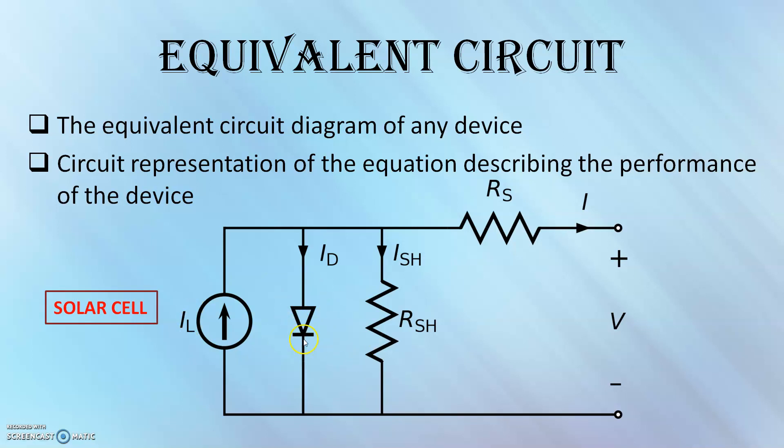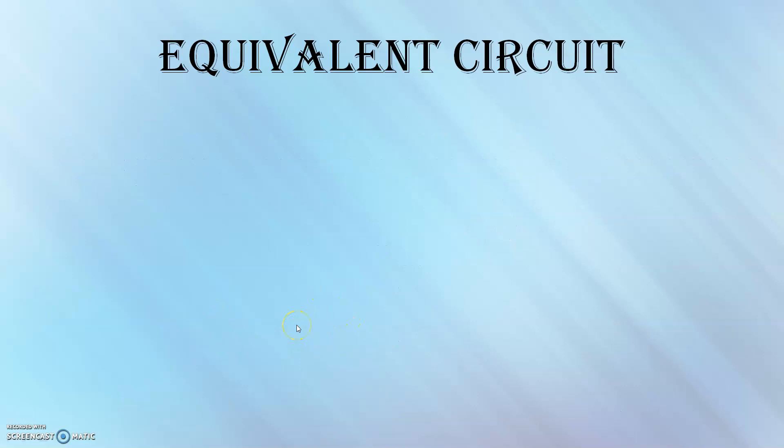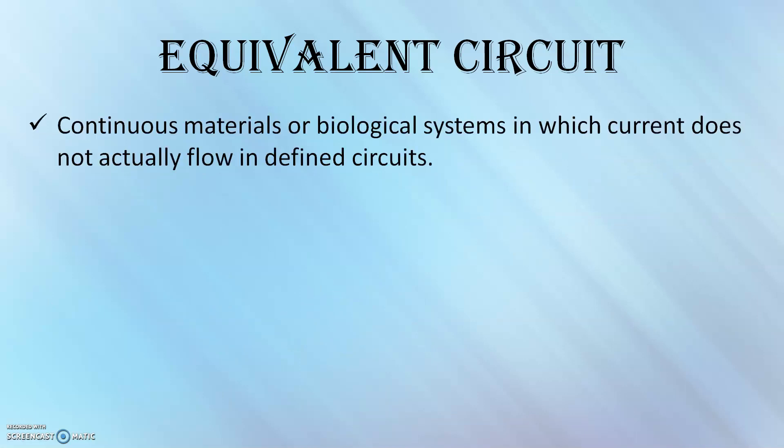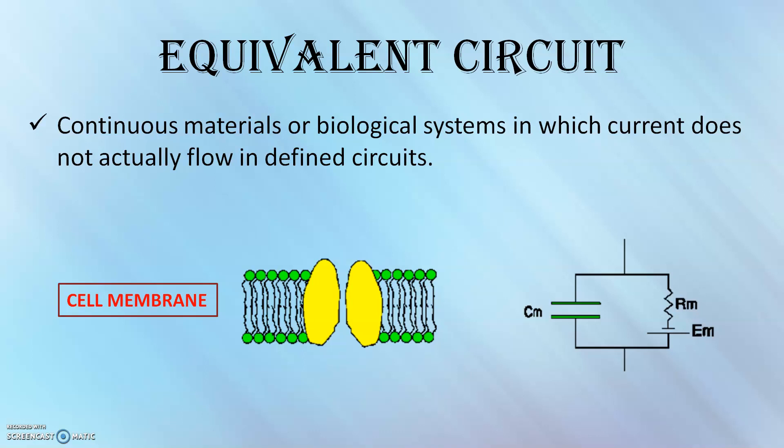You can also use equivalent circuits to electrically describe the models of continuous materials or biological systems in which the current does not actually flow in the defined circuit. For example, a cell membrane can be modeled as capacitance in parallel with a resistance and DC voltage source combination. Distributed reactances, such as found in electrical lines or windings that do not represent actual discrete components, can also be modeled using equivalent circuits.